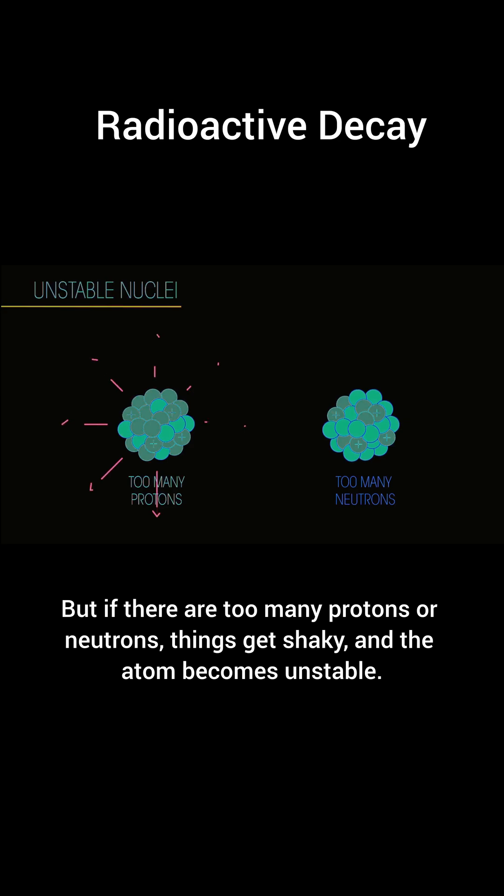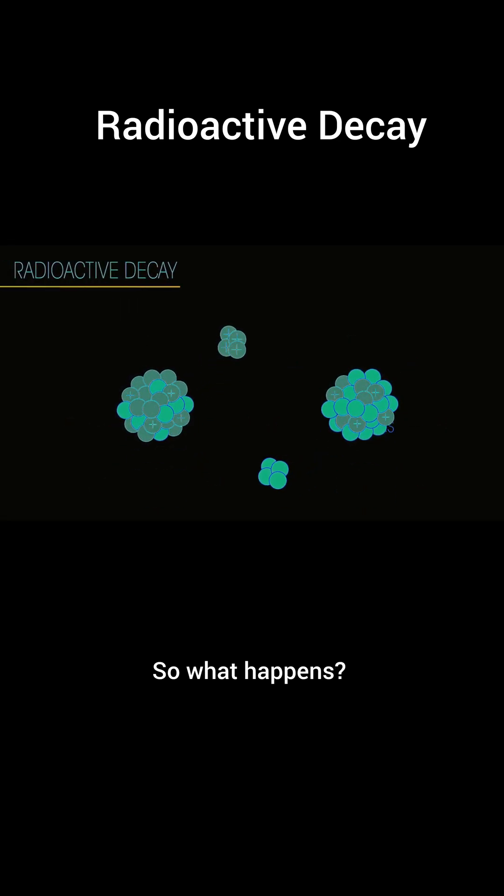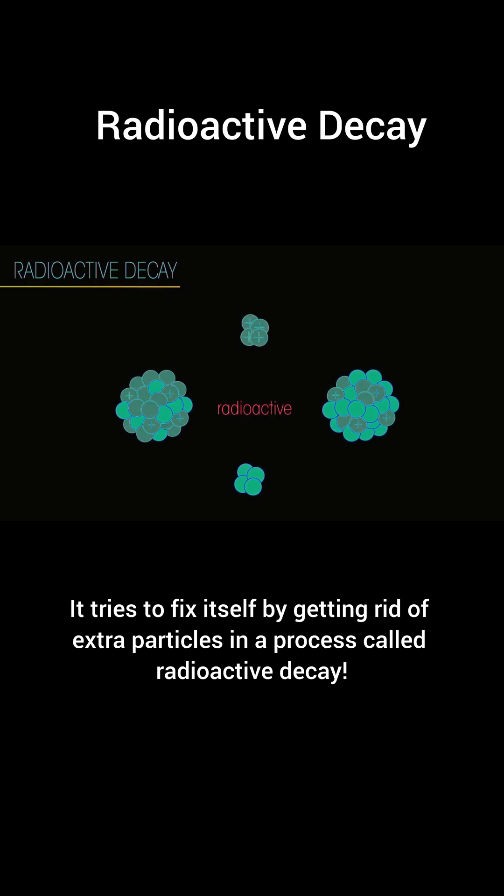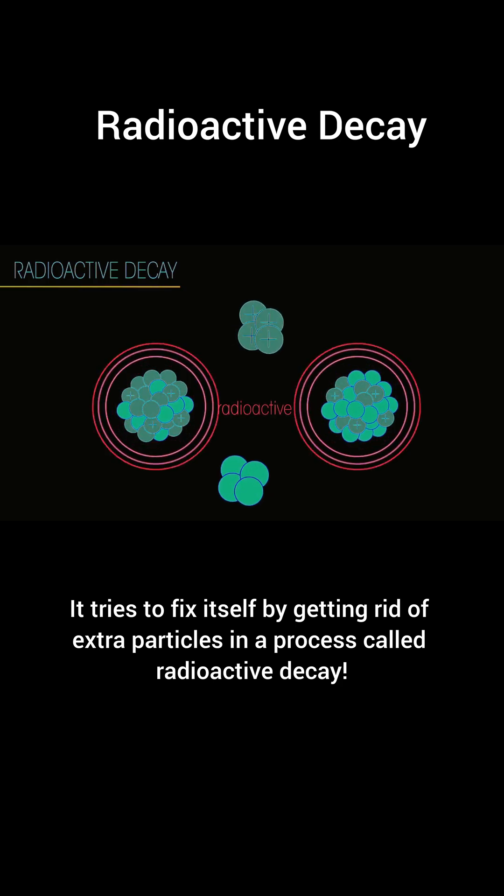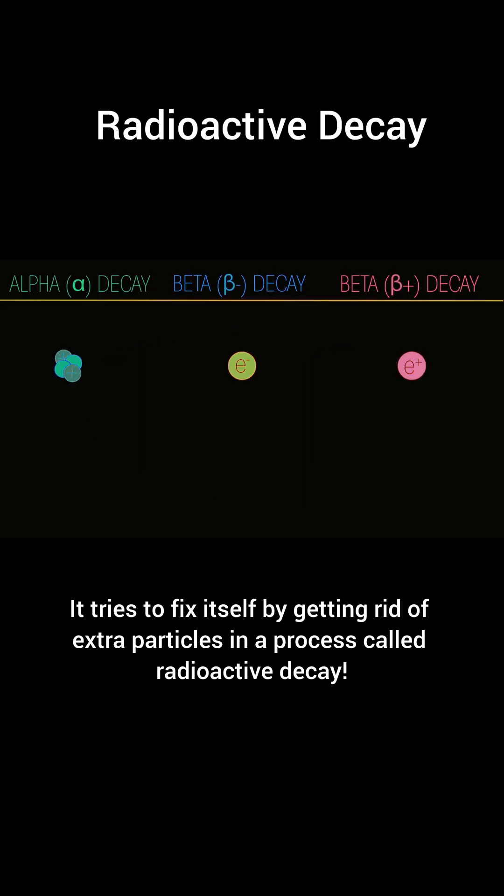But if there are too many protons or neutrons, things get shaky and the atom becomes unstable. So what happens? It tries to fix itself by getting rid of extra particles in a process called radioactive decay.